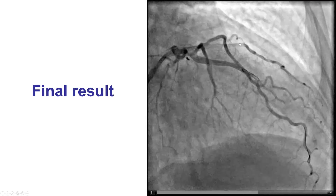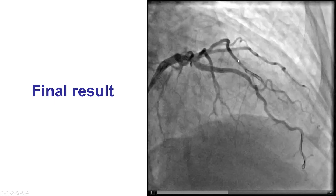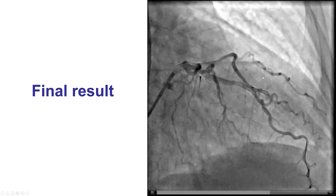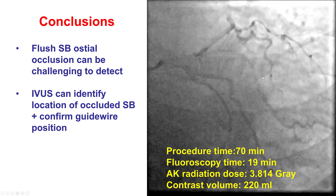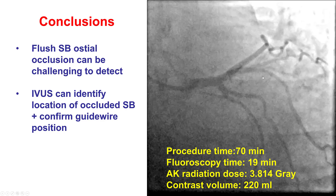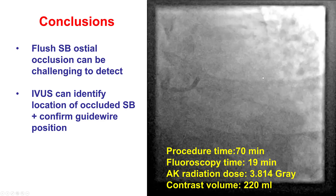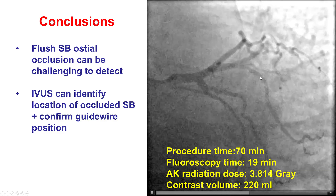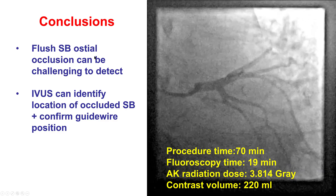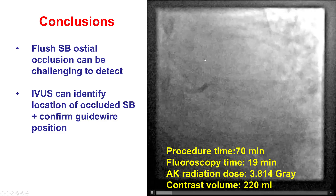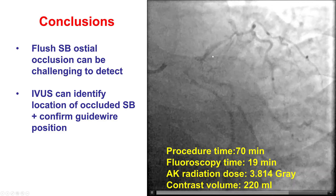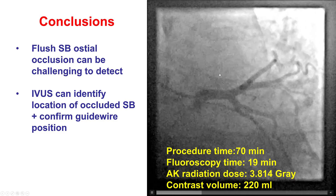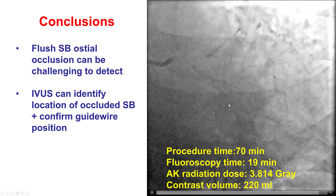This was the final result with good flow into this diagonal branch. This is a large bifurcating diagonal that was supplying a large portion of the anterior lateral wall, and re-canalization restored flow, restored the EKG, and stopped the patient's chest discomfort. In summary, when the culprit vessel is unclear in patients with acute coronary syndromes, using intravascular imaging — IVUS in this particular case — was useful for identifying the origin of the vessel, an ostially occluded diagonal branch, and also helped confirm that the guide wire went into this branch after wiring was attempted with the Sion Black.